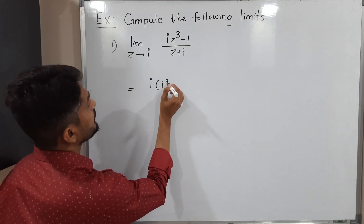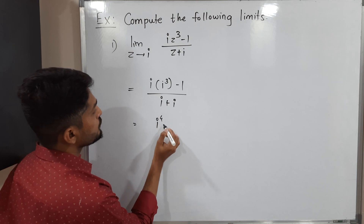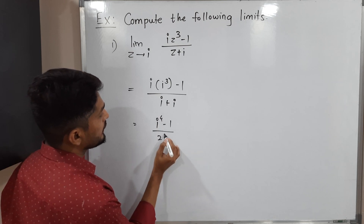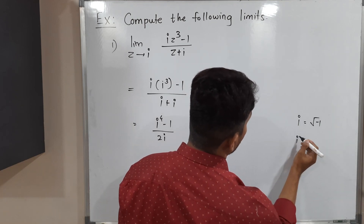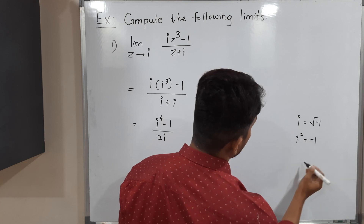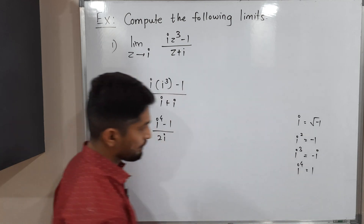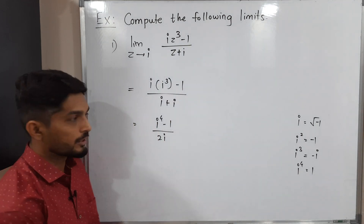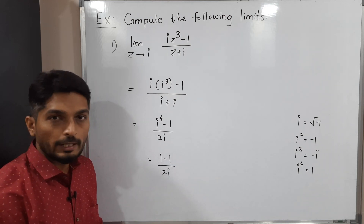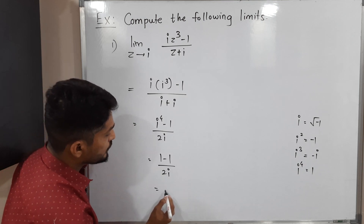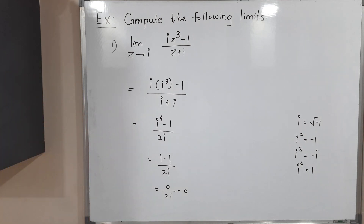Substituting z = i: we get i·i³ minus 1, divided by i + i. So i·i³ = i⁴, minus 1, over 2i. Recall that i² = -1, i³ = -i, and i⁴ = 1. So the numerator becomes 1 - 1 = 0, and the denominator is 2i, which is non-zero. Therefore 0/(2i) = 0, which is the required answer.